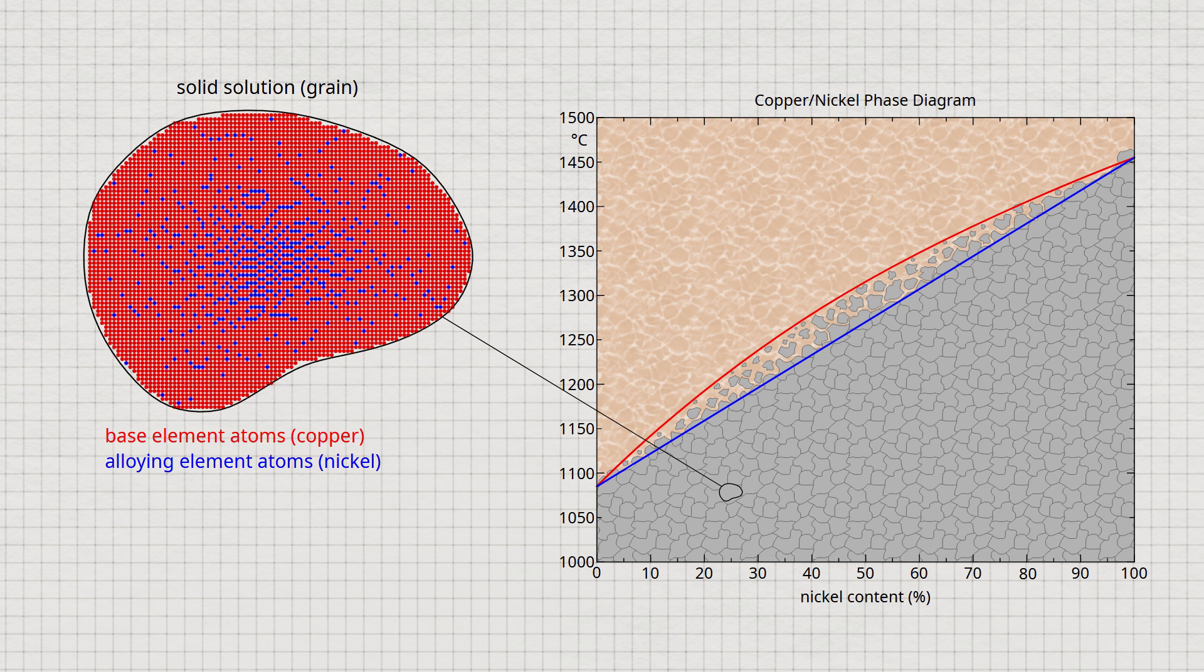In fact, it turns out that within a grain, the alloy concentration varies to a greater or lesser extent.